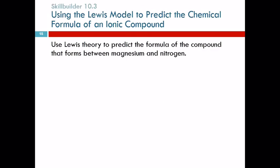Use Lewis theory to predict the formula of the compound that forms between magnesium and nitrogen. We learned how to do this by looking at the periodic table, predictable charges, crisscrossing — but we're going to use Lewis theory to show what happens. Magnesium has two valence electrons. Nitrogen has five valence electrons — group five.